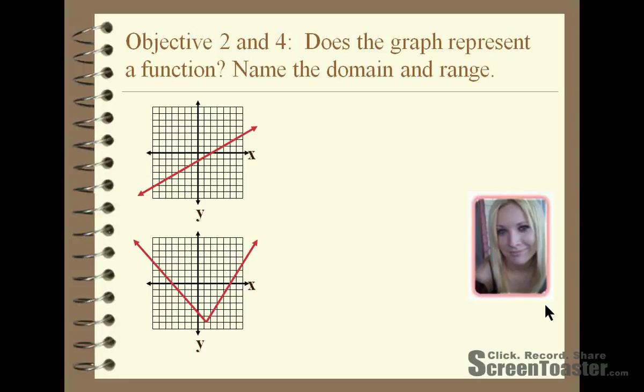If you were to place a vertical line through this first graph, it would only cross at one point. Therefore, this first one would be a function.